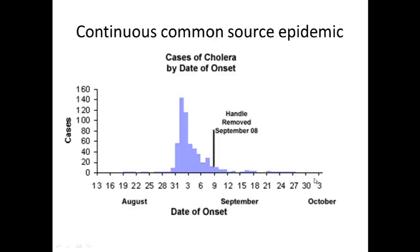The next pattern is known as continuous common source epidemic. This is a graph taken from the classic cholera epidemic described by Dr. John Snow in 1854 in London, which was caused by polluted water from one of the Broad Street pumps. Here you can see a sharp increase in the number of cases followed by a decline.